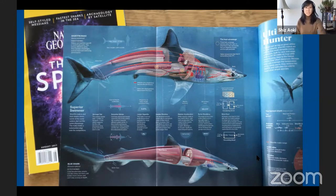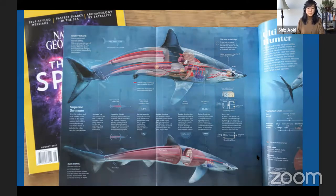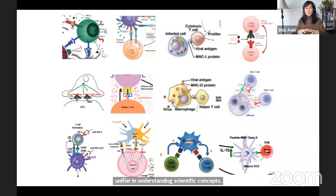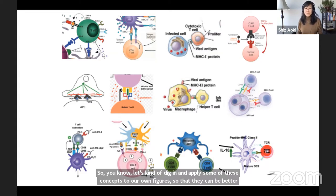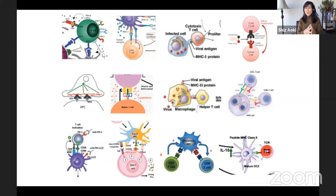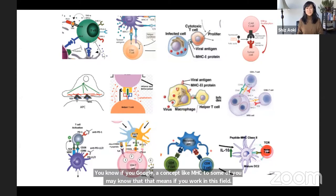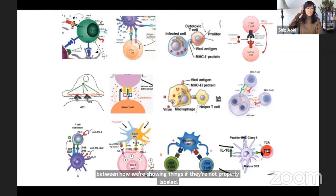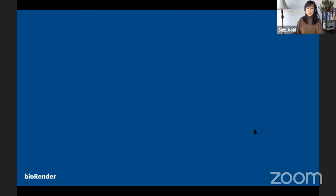Let's dig in and apply some of these concepts to our own figures. If you Google a concept like MHC-2, you actually get several different ways in which it's communicated in the world today — many published images — and it becomes difficult to consume and understand concepts if there's no commonality between how we're showing things and if they're not properly labeled. It's been left up to scientists to create these figures, but as a medical illustrator, I understand how complex it is. Hopefully the tips today will make it easier for you.